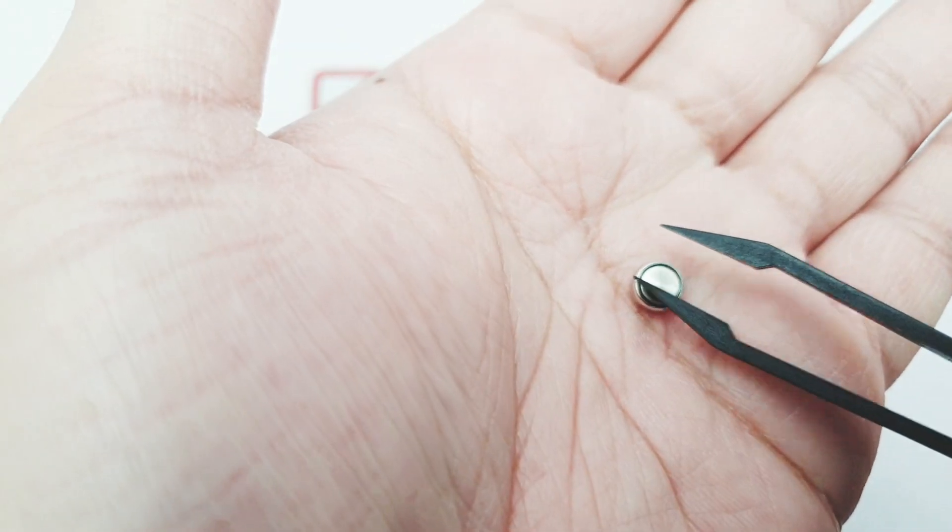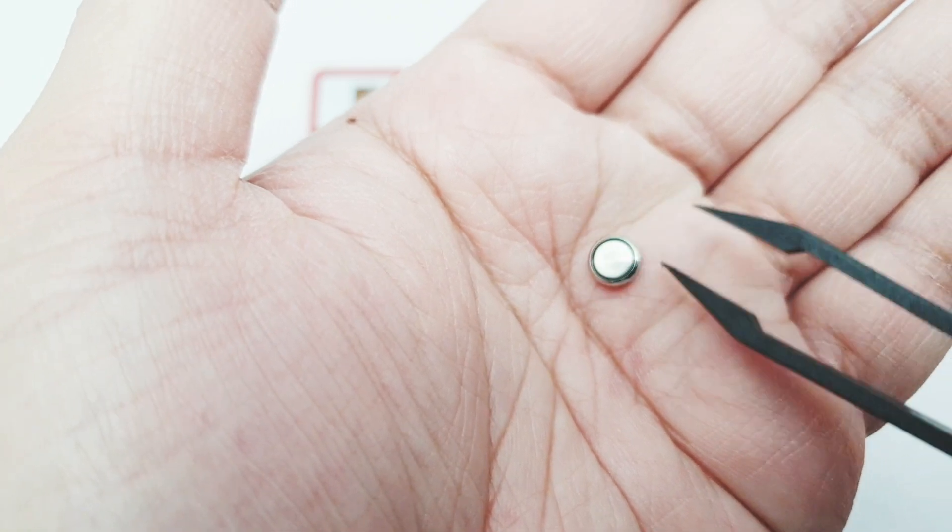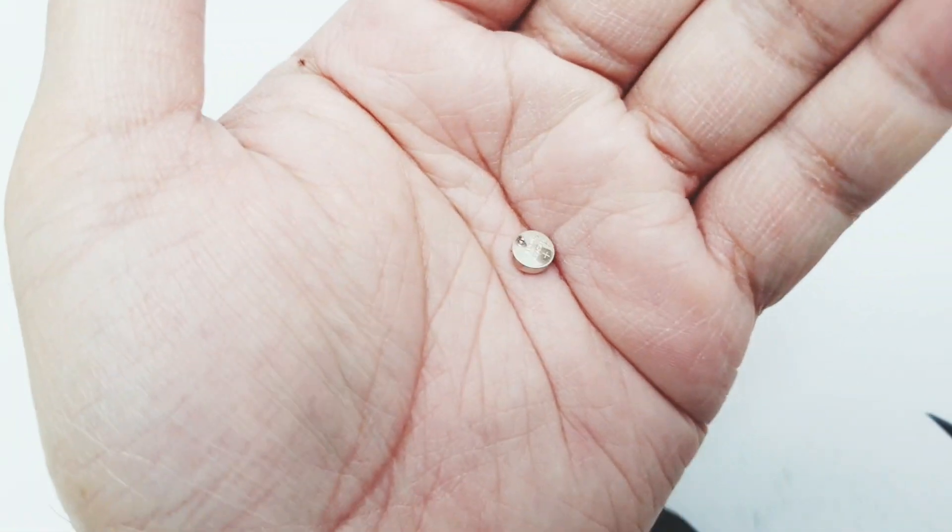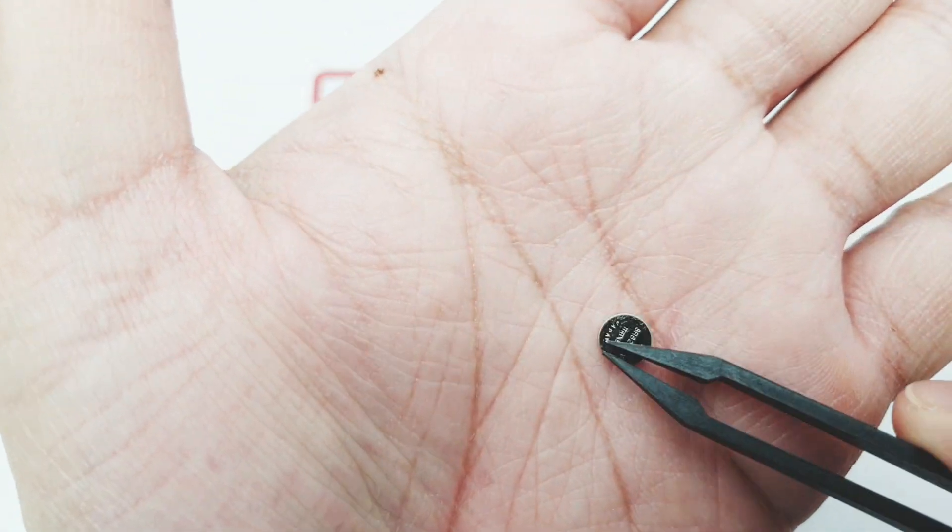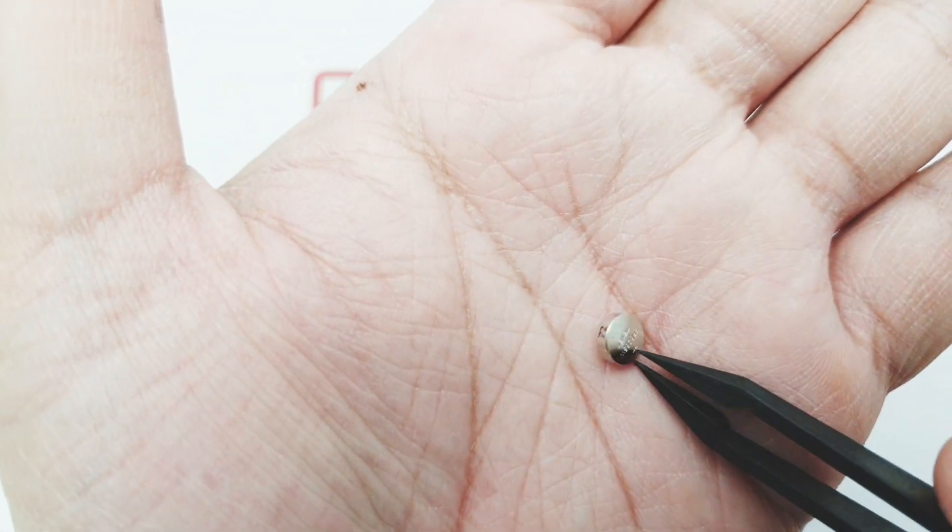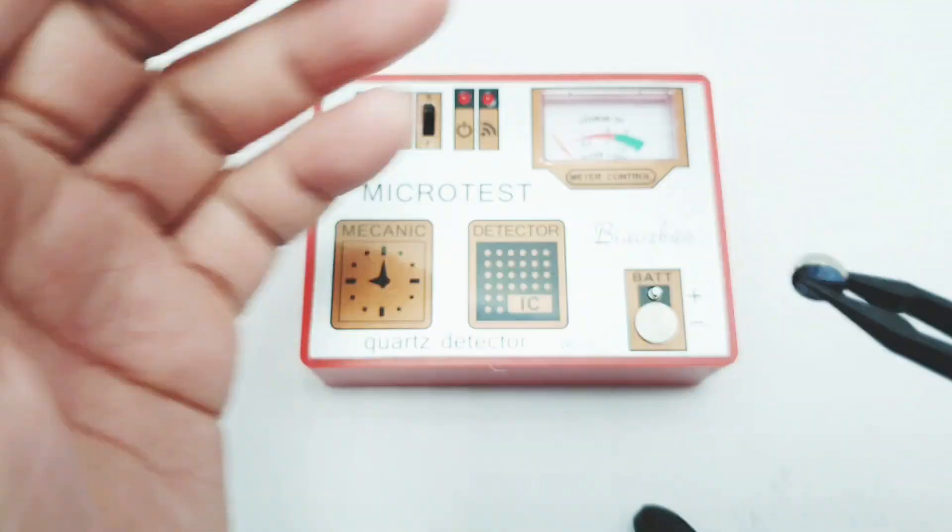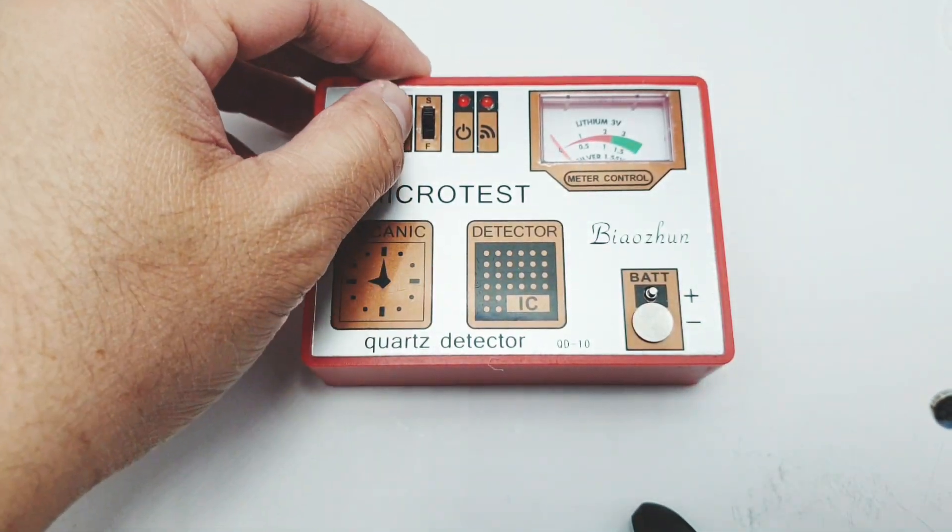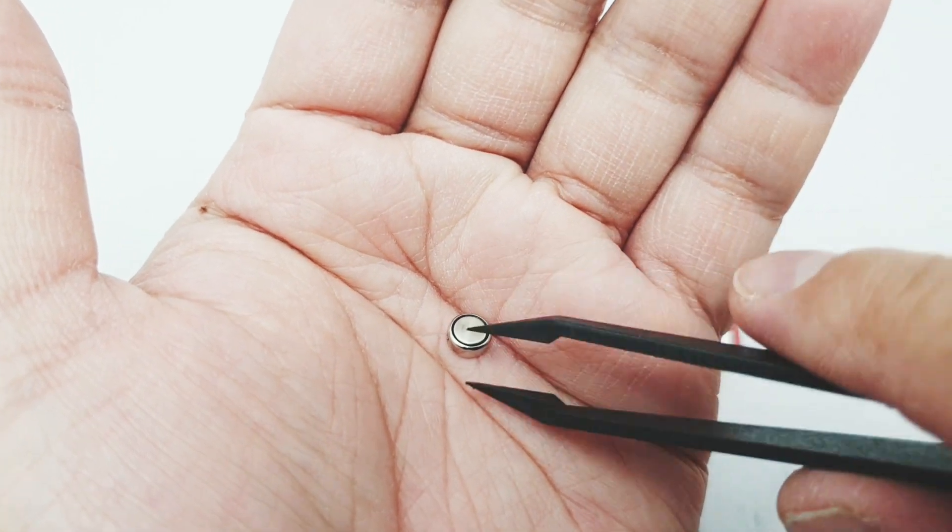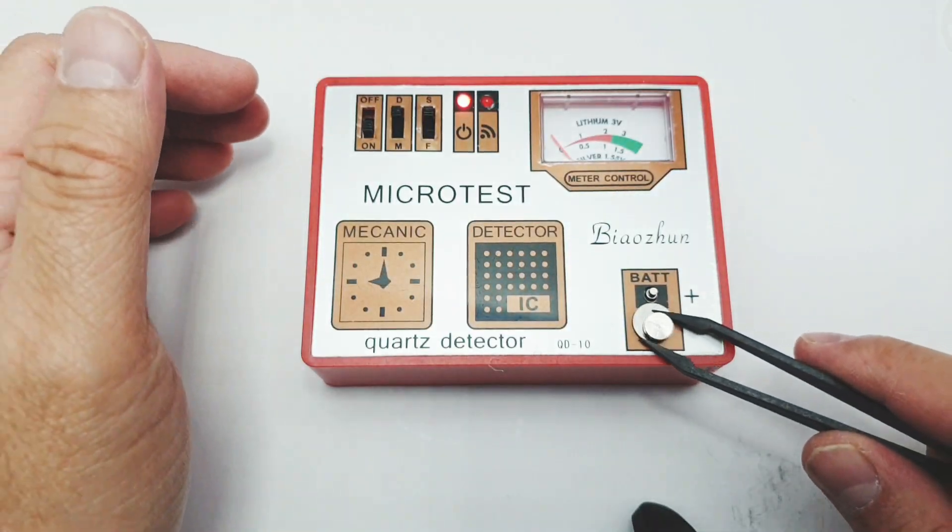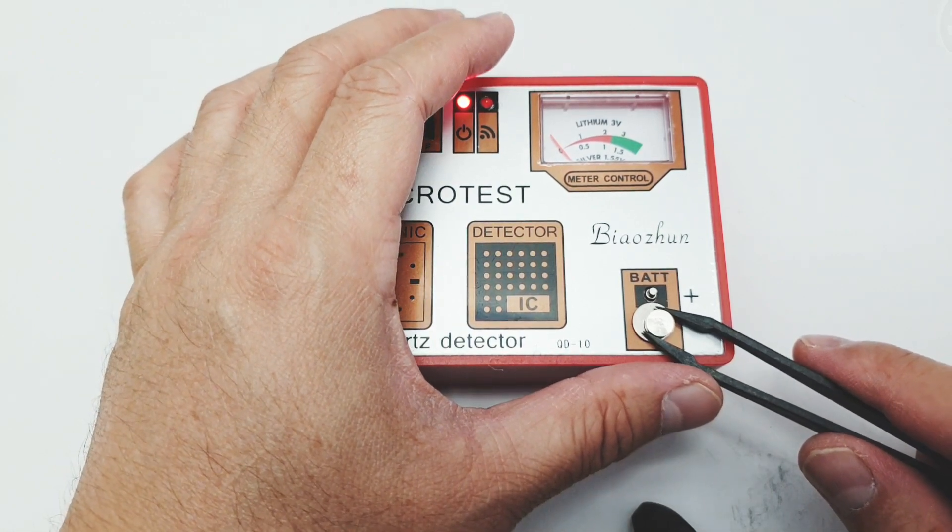As you can see this button type battery has negative and positive terminals. The back side is the positive and the other part at the bottom is the negative. So now let's test it, let's put the battery on the testing terminal.